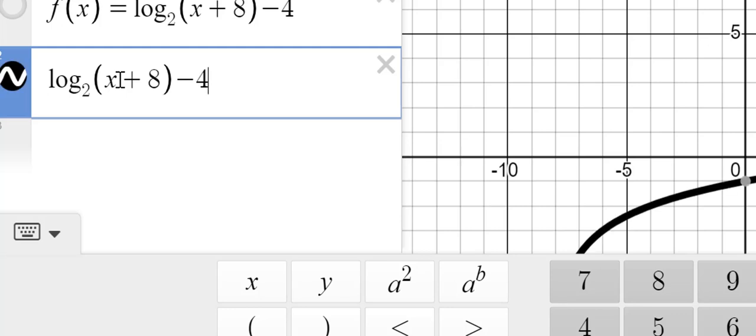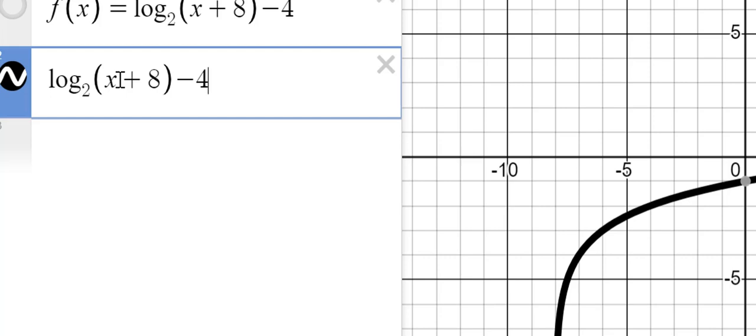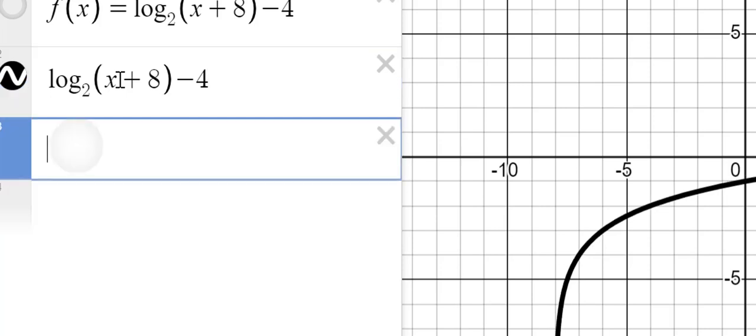Now you'll see, over here, we get this function. Now from our work, we got an asymptote, our vertical asymptote, was at x equals negative eight. So we're gonna go to the next line, and we're gonna type in x equals negative eight.